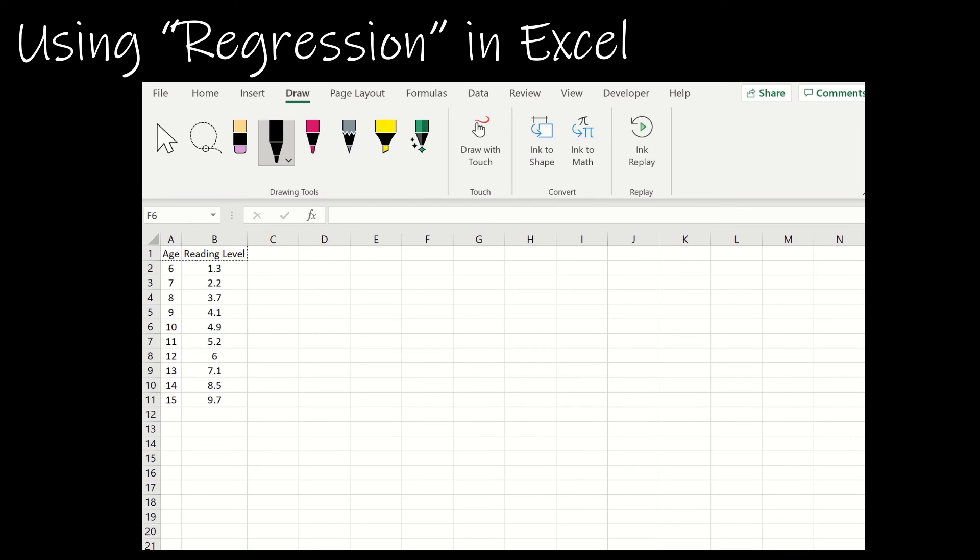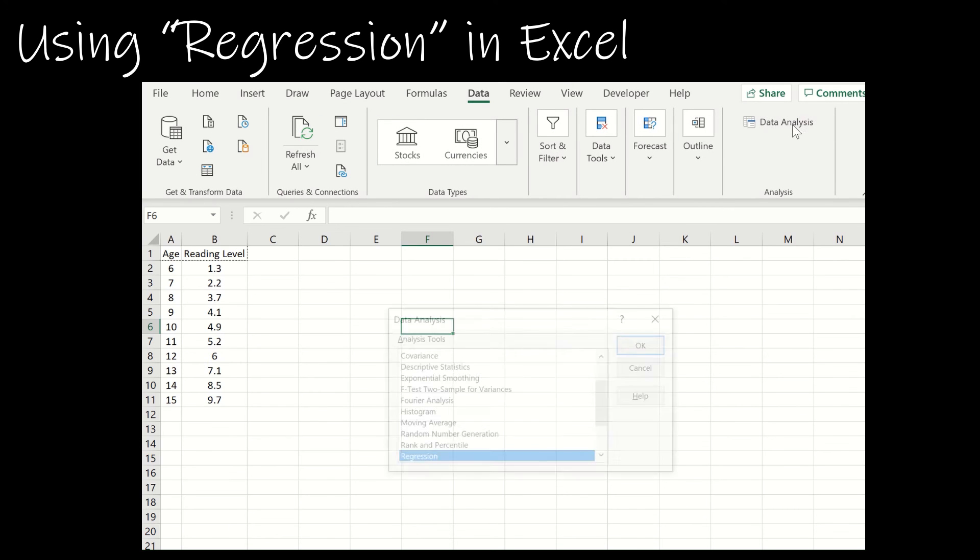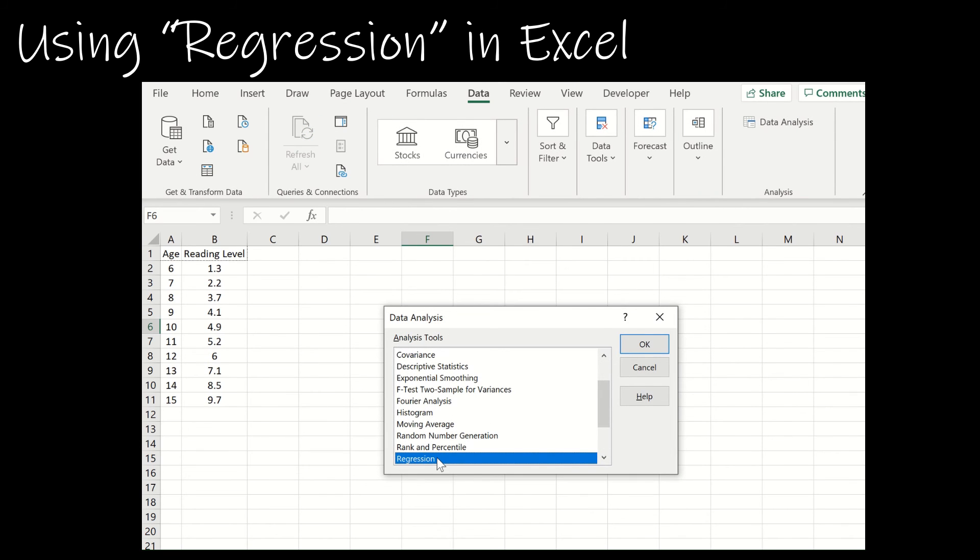Before we move on, I do want to show you one more thing in Excel, and that is to use the data, data analysis, regression option. Now just a reminder, if you don't see data analysis up here, it's just an add-in. You have to go to file, options, add-ins, and enable it. I've shown you how to do that in a previous video, so I'm going to assume that you've watched the previous video and have it enabled already. So I'm going to click on regression and OK.